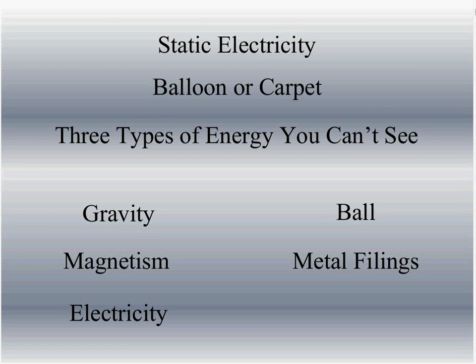And electricity — you can't see electricity either. But if you were to take some hair follicles, put them in a bottle of oil, shake them, run a comb through your hair to get static electricity started, and put it next to the bottle, those hair follicles would line up very similar to what magnetism does.